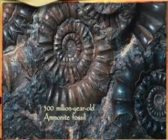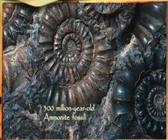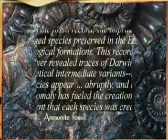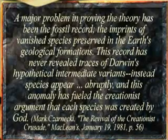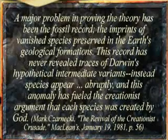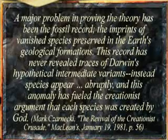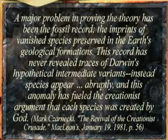The evolutionist paleontologist Mark Czarnecki admits as much: 'A major problem in proving the theory has been the fossil record, the imprints of vanished species preserved in the Earth's geological formations. This record has never revealed traces of Darwin's hypothetical intermediate variance. Instead, species appear abruptly, and this anomaly has fueled the creationist argument that each species was created by God.'